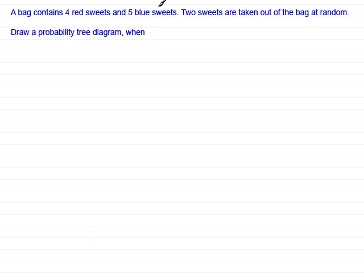I've got here that a bag contains 4 red sweets and 5 blue sweets. Two sweets are taken out of the bag at random. Draw a probability tree diagram when the sweets are taken with replacement. So you just take out a sweet, note its colour, put it back in the bag and take out another sweet. Grab yourself a piece of paper. I'll give you time to switch off this video, draw the tree diagram, and then come back and restart the video. I'll give you 10 seconds to pause the video.